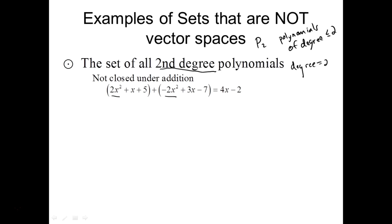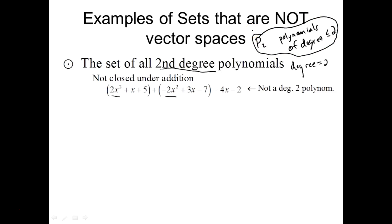Therefore, this set — the set of all second-degree polynomials — is not a vector space, because when you add two elements it's possible to leave that set. The result may not be a second-degree polynomial. With P2 using less than or equal to two, you get a vector space; using equal to two, you do not.